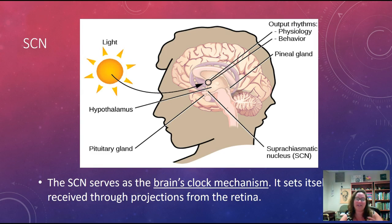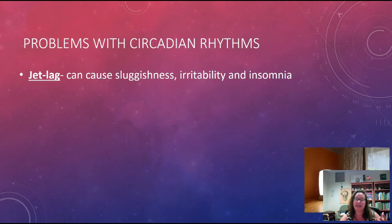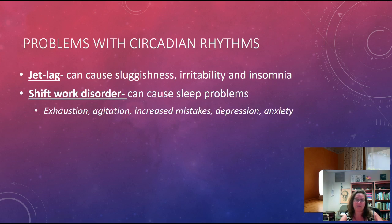The SCN is the brain's clock mechanism and relies on the retina of the eye to set itself with light. There are a lot of problems that can occur with circadian rhythms. For example, if you live in Virginia and fly to California, you might experience jet lag — trouble sleeping, sluggishness, irritability, and exhaustion from that circadian shift. Shift workers, like nurses who stay up all night, can experience circadian rhythm issues leading to mistakes at work, depression, anxiety, and physical health concerns.